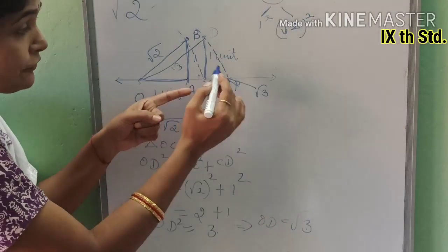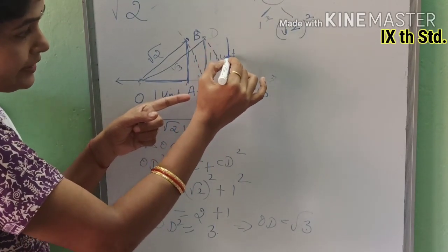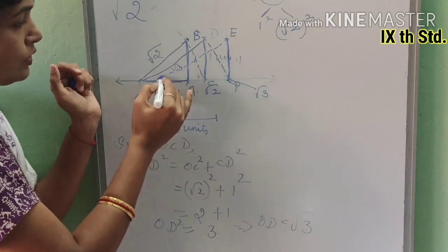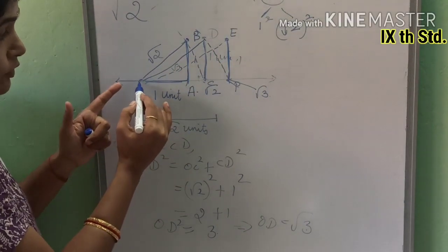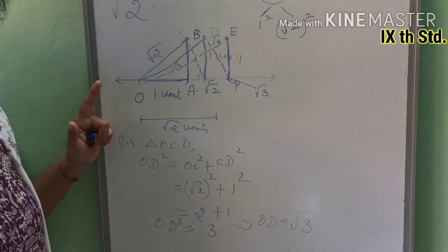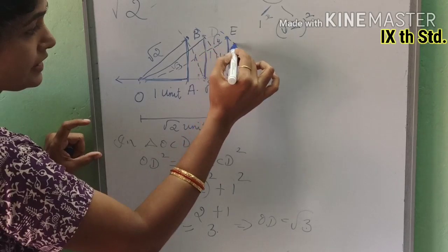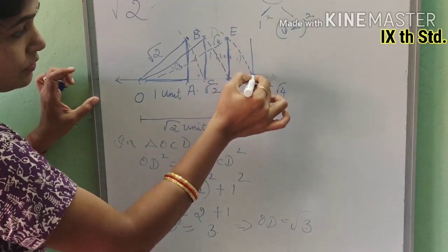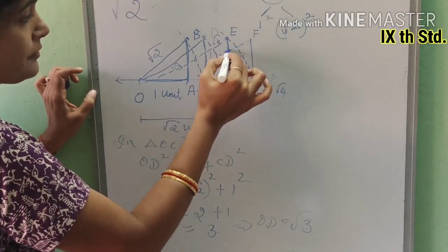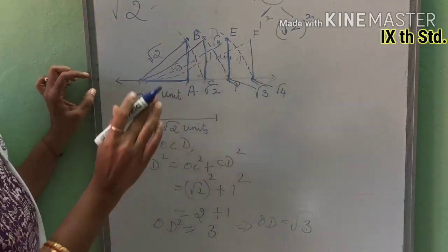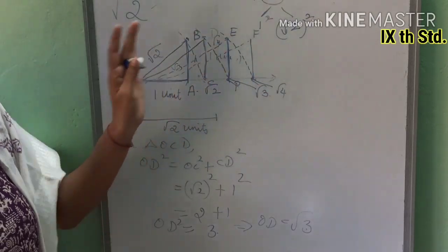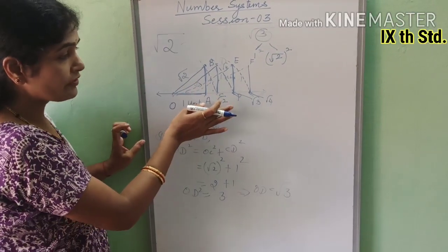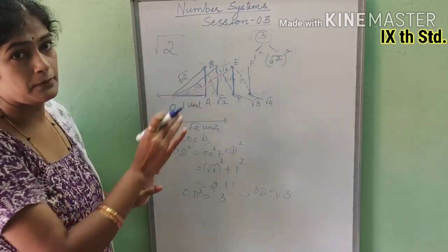If we now draw a 1 unit perpendicular at the root 3 point and join to O, we get root 4. Root 4 is nothing but 2. Then at that point, if we draw another 1 unit perpendicular and join to O, we get root 5. This is another way of representing irrational numbers on the number line — the spiral method taught in session 2.